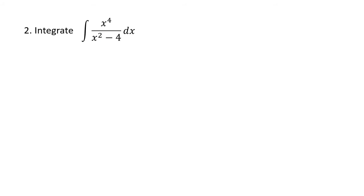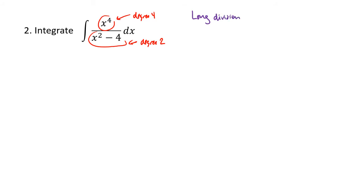Now we look at a problem where the fraction isn't proper. The top of our fraction is degree 4 and the bottom is degree 2. This is improper because the top has higher or equal degree — if the degrees are equal, we also have to do this next step. So we need polynomial long division, which works a lot like long division for numbers: we divide x squared minus 4 into x to the fourth. It's helpful to write out the missing powers with coefficients of zero.